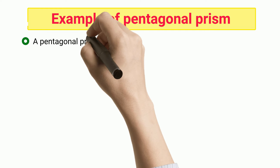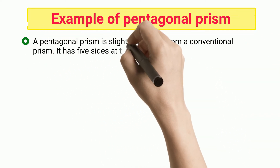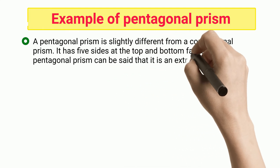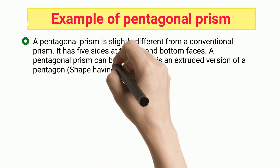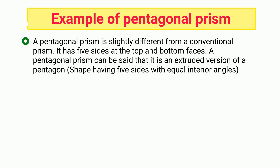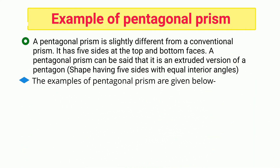Example of pentagonal prism: a pentagonal prism is slightly different from a conventional prism. It has five sides at the top and bottom faces. A pentagonal prism can be described as an extruded version of a pentagon shape having five sides with equal interior angles.